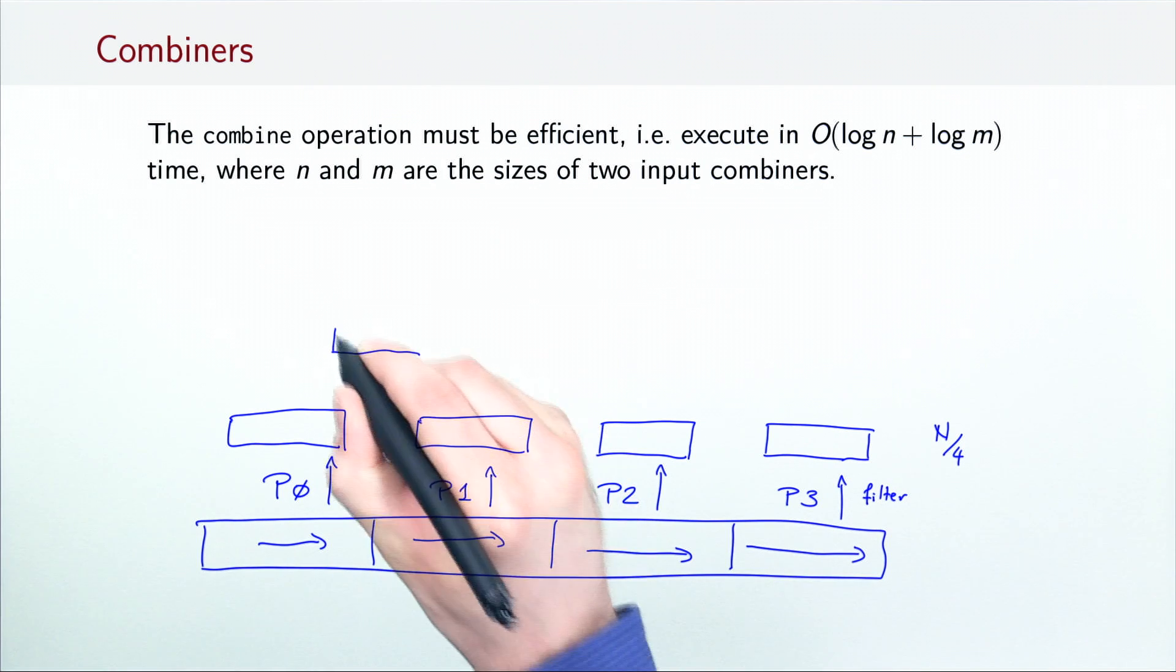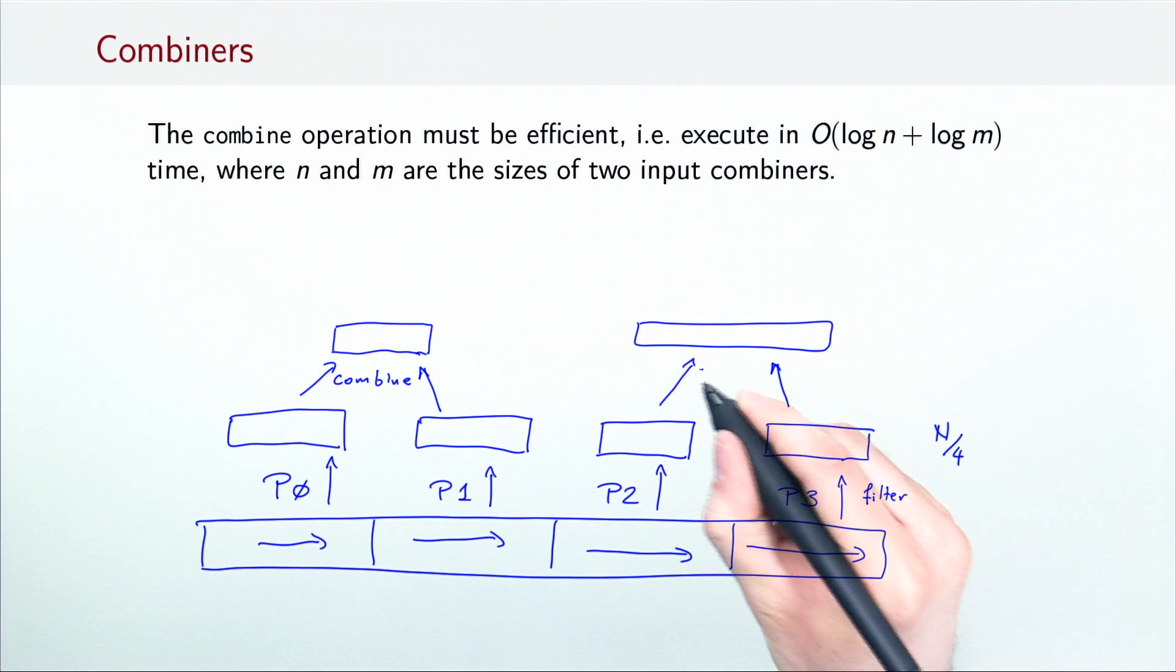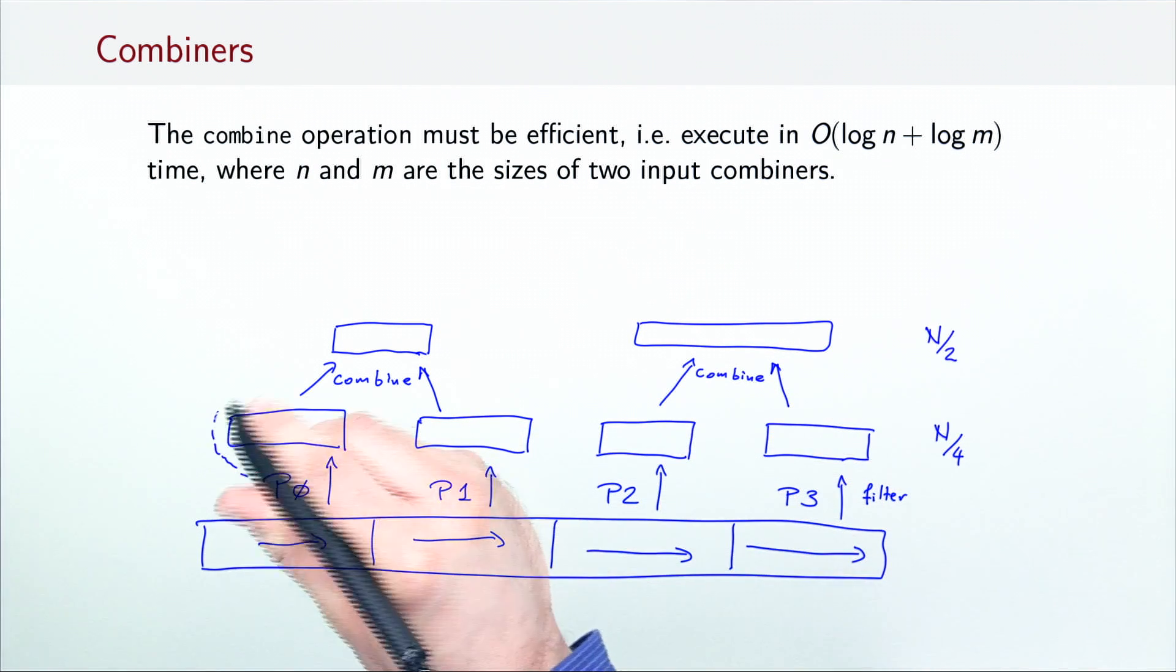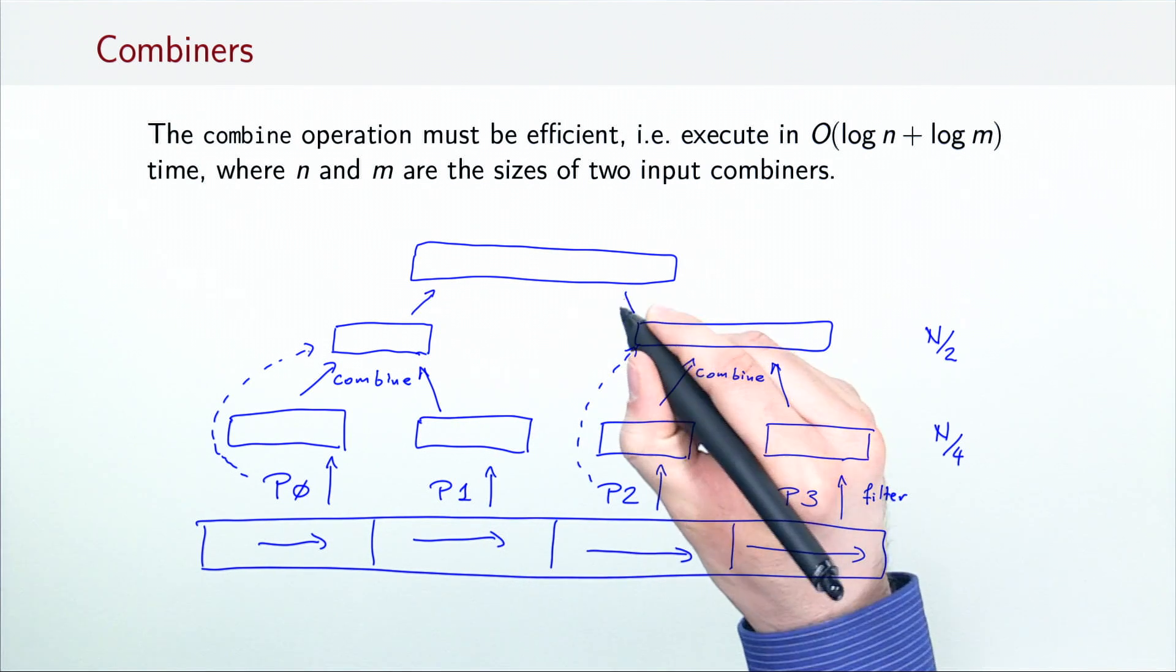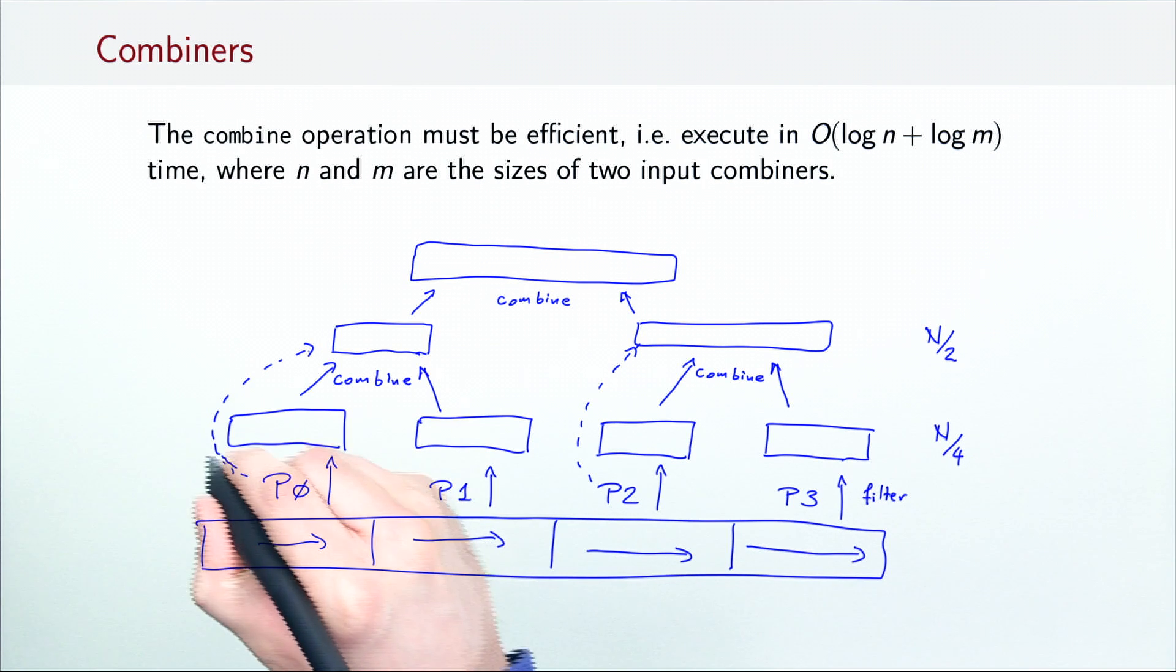At the next level of the tree, two pairs of arrays would be combined in n divided by 2 computational steps, by for example processors P0 and P2. Finally, a single processor would need to call combine to produce the final array at the root of the tree, which takes n computational steps.